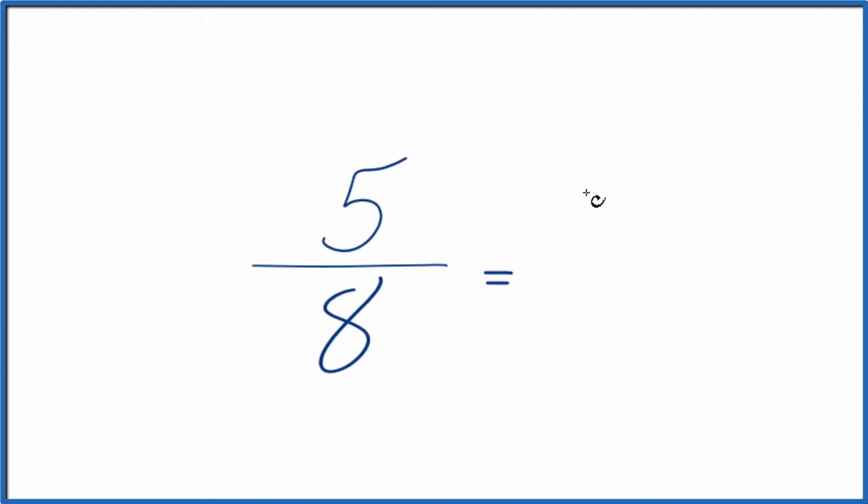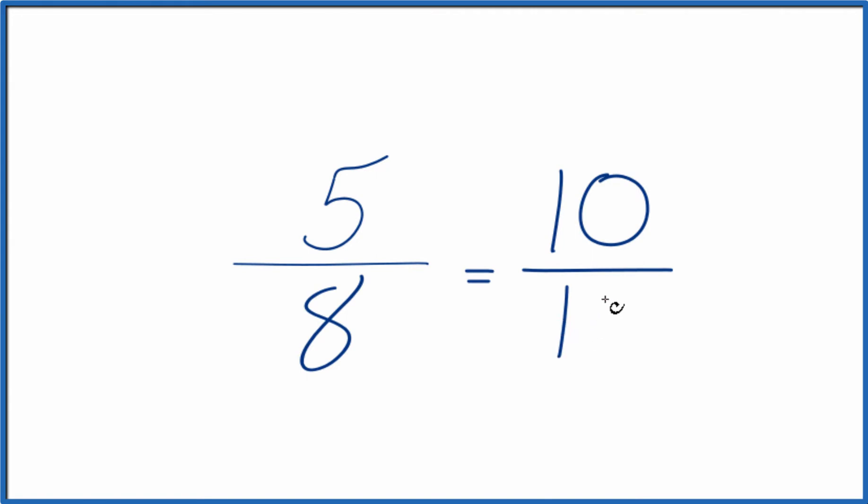For example, we could multiply 5 times 2, that would give us 10, and then 8 times 2, that would give us 16. This is an equivalent fraction or an equivalent ratio to 5 eighths.